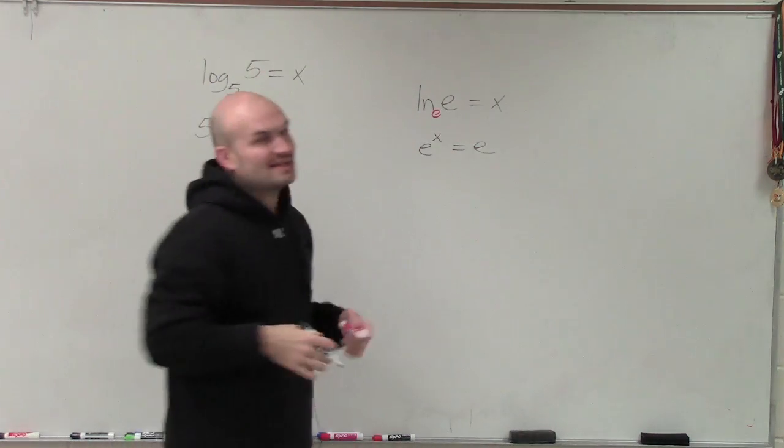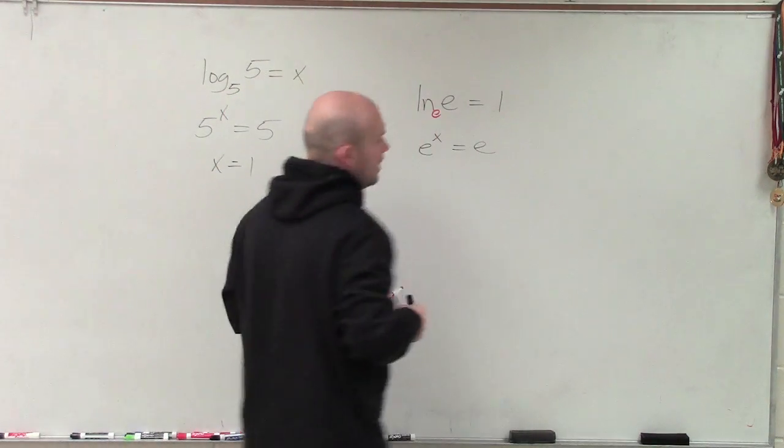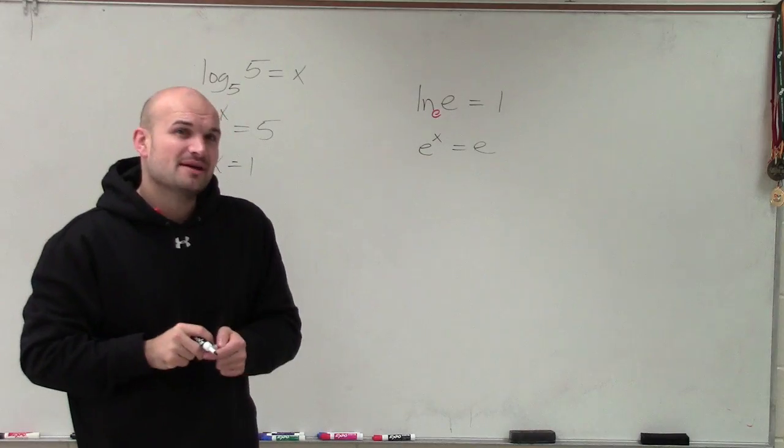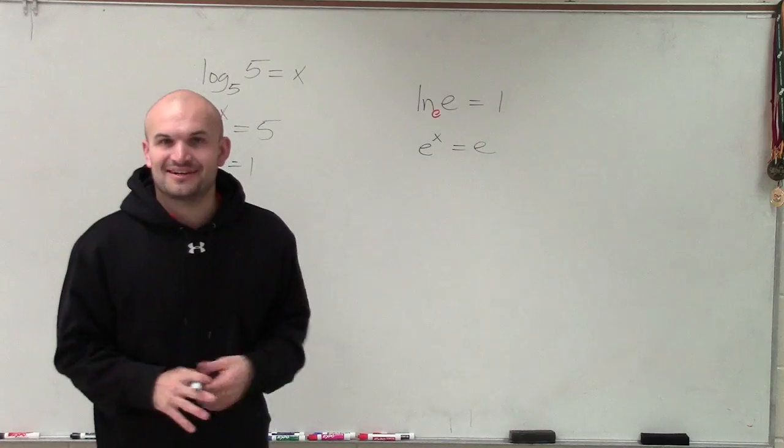Well, therefore, we can understand that the ln of e is always going to equal 1, which is a very common identity, but something that we just need to keep on remembering when we're evaluating logarithms. And of course, we can do it without a calculator. Thanks.